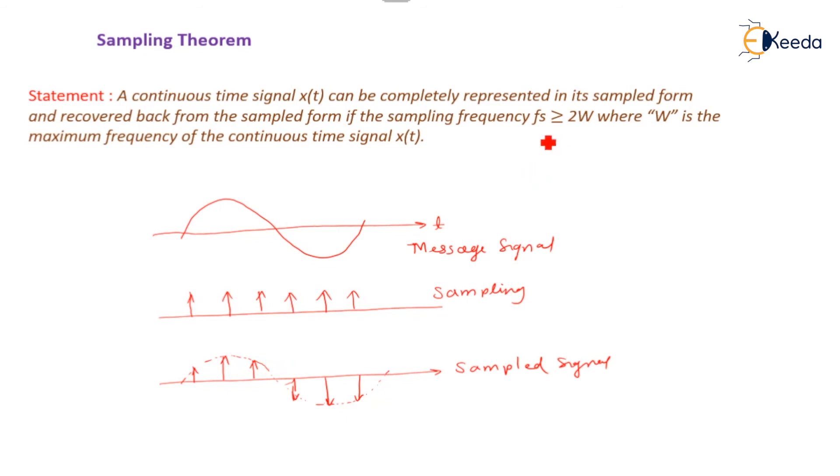Hence, here, we are assuming the Nyquist criteria that sampling frequency should be twice or greater than the maximum frequency of a continuous time signal.